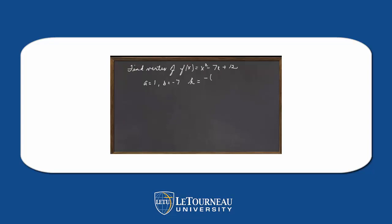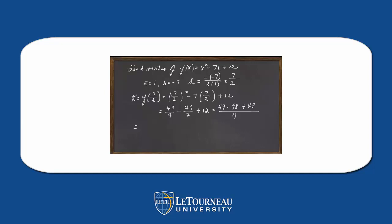Notice a = 1, b = -7, so h = -(-7) / (2·1) = 7/2. Now we have to substitute 7/2 into our original function, being very careful with the arithmetic. You can always use your calculator to help. So f(x) has a minimum at the point (7/2, -1/4). Since a = 1 > 0, we have a minimum.